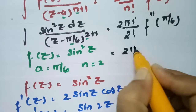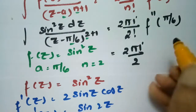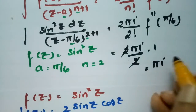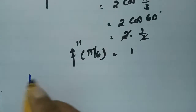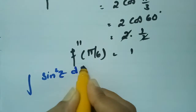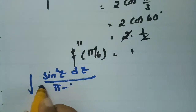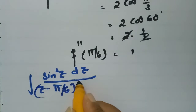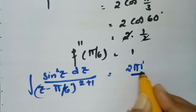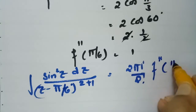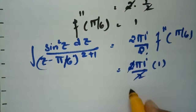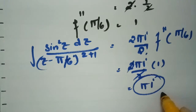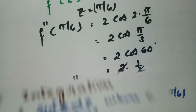Substituting back: the integral equals 2πi / 2! · f''(π/6) = 2πi / 2 · 1 = πi. So the value of the integral of sin²z / (z - π/6)³ dz over the contour |z| = 1 is πi.